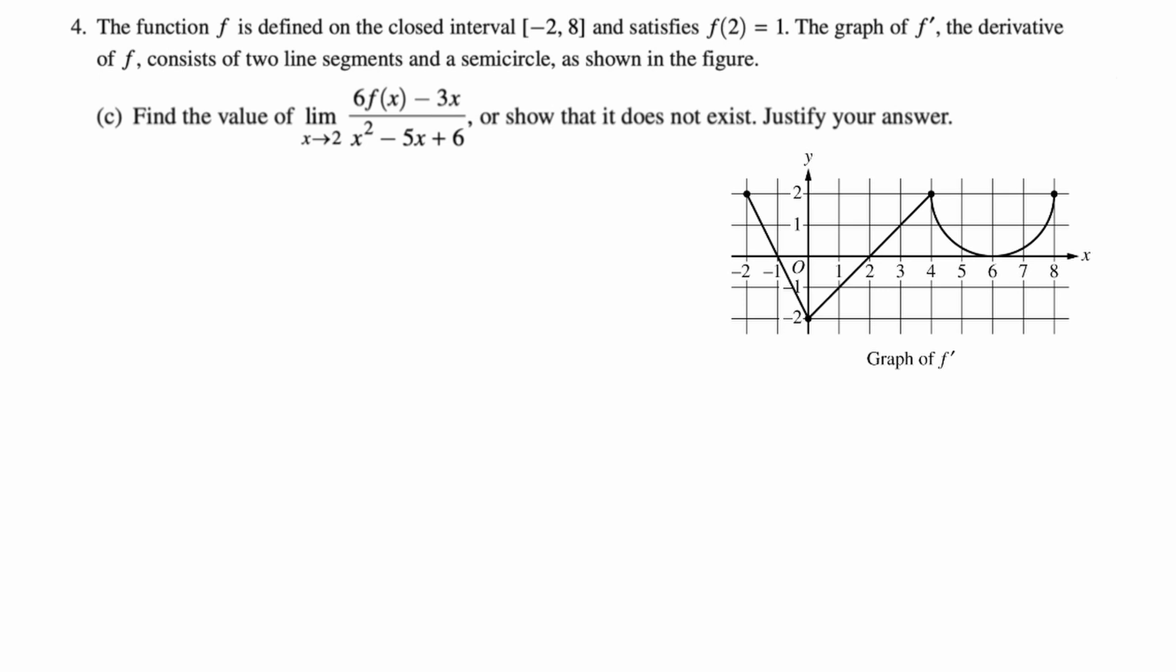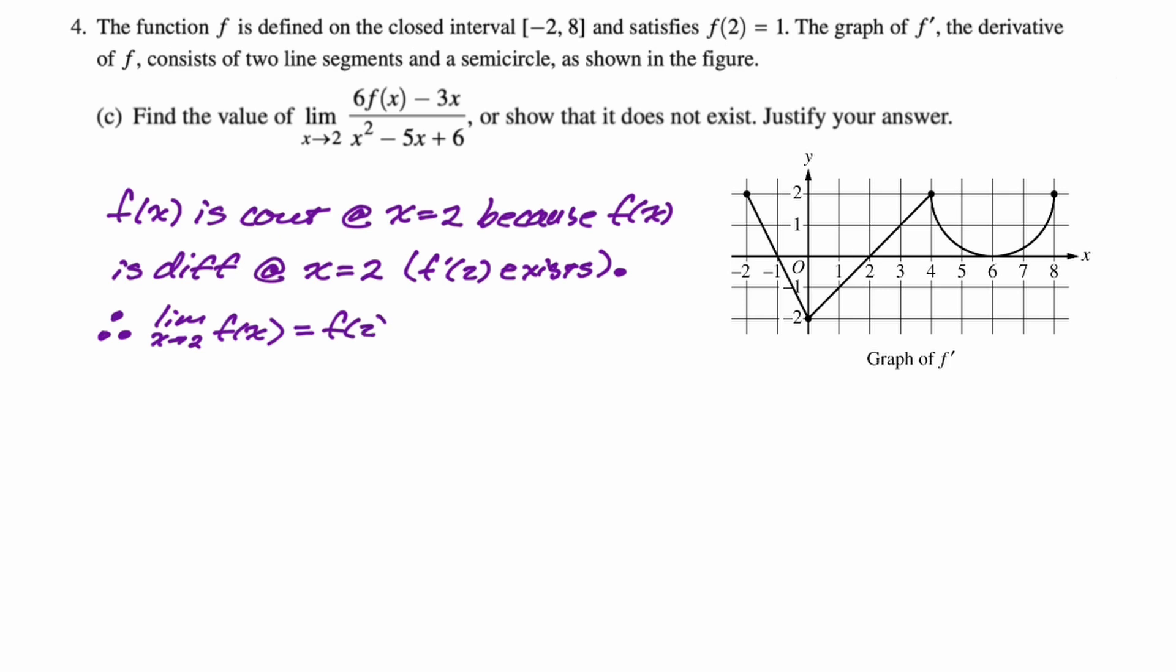First, we're going to need to establish that the limit as x approaches two of f of x is equal to f of two, because otherwise we just know f of two is one, but is f continuous at two? If f is not continuous, then f of two doesn't need to equal the limit. So let's establish that. I'm going to say f of x is continuous at x equals two, and my reason for that is going to be because f of x is differentiable at x equals two. And I know that is true because f prime of two definitely exists because I have the graph of f prime. So f prime of two exists. f prime of two is actually zero. This will allow us to establish that the limit as x approaches two of f of x is equal to f of two, which is equal to one, which is what's given in the problem.